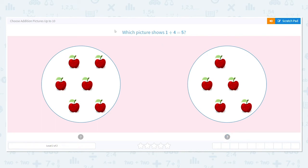Hi! Today we are going to practice choosing addition pictures up to 10. So in this first question I have two pictures of apples and I want to know which picture shows 1 plus 4 equals 5. Now the best way for me to do this is think of this addition problem as a puzzle.